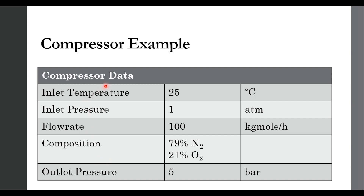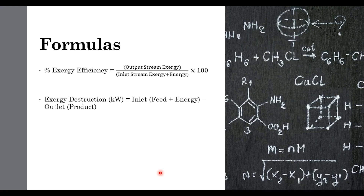We have been given compressor data: stream temperature is 25°C, pressure 180 mmHg, flow rate 100 kg-mole per hour, with composition of 79 mole percent nitrogen and 21 mole percent oxygen. We need to compress it to 5 bar. The percentage exergy efficiency is calculated as output stream exergy divided by inlet stream exergy plus energy input — one of several available formulas in the literature.